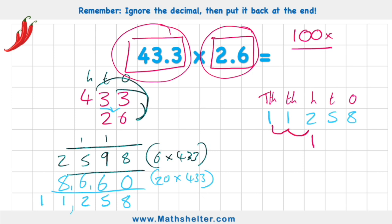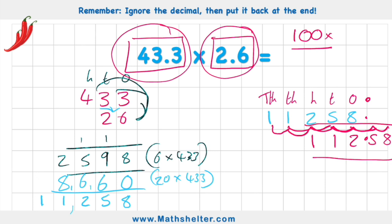My 1 moves two places. My next 1 moves two places. My 2 moves two places. My 5 moves two places. And my 8 moves two places into a place I don't even have space for. So finishing this off — decimal — my answer is 112.58.